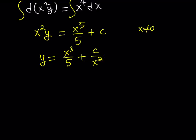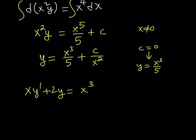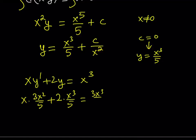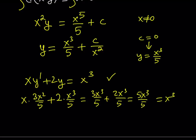Since we have a constant, you can replace c with anything, including zero. If c equals zero, you get y equals x cubed over five. Let's go ahead and test that in the original equation: x multiplied by the derivative of x cubed over five, which is 3x squared over five, plus two times x cubed over five. That gives three x cubed over five plus two x cubed over five, which equals five x cubed over five, which is x cubed. That satisfies our equation.